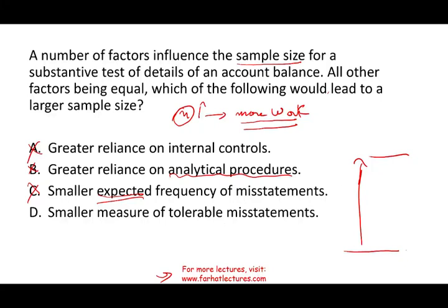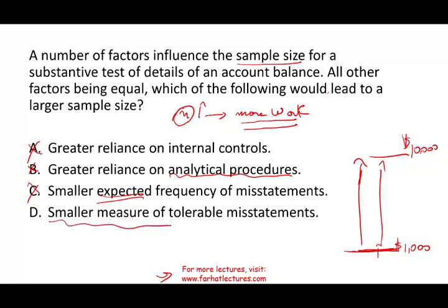If you cannot tolerate greater misstatement — say misstatement above $1,000 is not tolerable versus $10,000 — then $1,000 is a very low bar you'll be crossing very quickly. So if your tolerable misstatement is low, you're going to have to do more testing. But if you can tolerate up to $10,000 in misstatement, you have more room and don't need to examine the information in as much detail. Therefore, you can have a smaller N. But with a smaller tolerable misstatement, you must do more work because you cannot tolerate many mistakes.